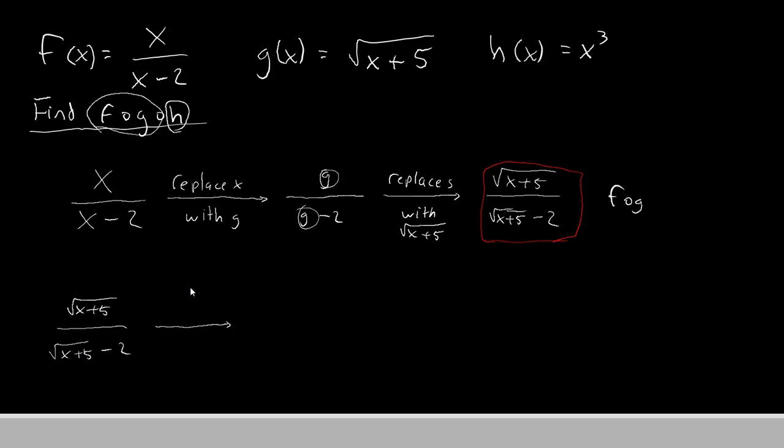And now for our next step, we will now replace the x with the next letter in the sequence, h. So our function becomes this. Root of h plus 5 divided by root h plus 5 minus 2.